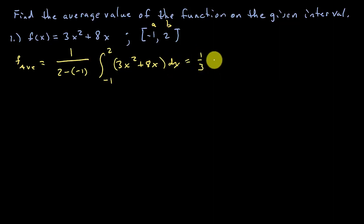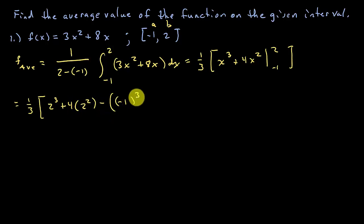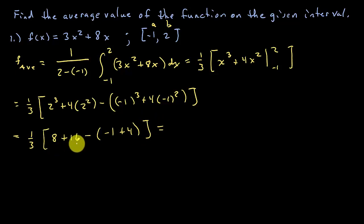This is going to be 1 third, and then let's integrate: that's x cubed plus 4x squared from negative 1 to 2. That gives us 1 third times 2 cubed plus 4 times 2 squared, minus negative 1 cubed plus 4 times negative 1 squared. So that's 1 third times 8 plus 16, minus negative 1 plus 4. That's 1 third times 24 minus 3, which is 21, and 21 times 1 third is 7. So the average value is 7.